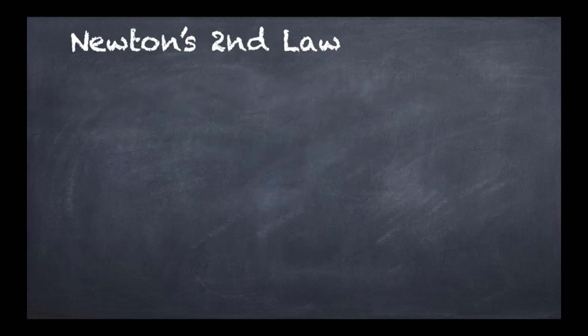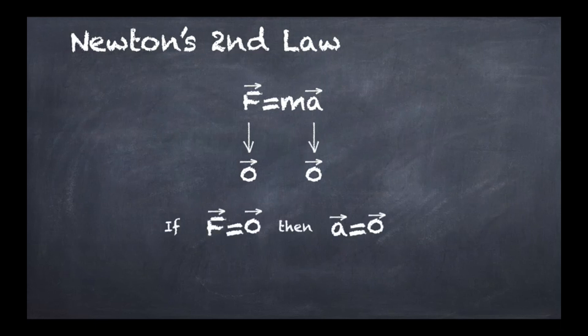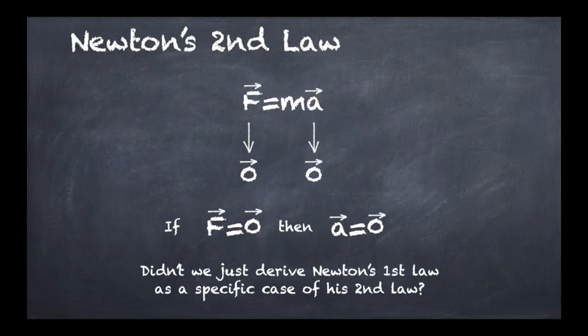Now if we look at Newton's second law we find the famous F equals MA. The arrows on top of F and A simply remind us that forces and acceleration have a magnitude and a direction. Now if I set the value 0 to the force in this equation then automatically I'm going to get 0 for the acceleration. So if F equals 0 then Newton's second law is actually telling me that A equals 0.